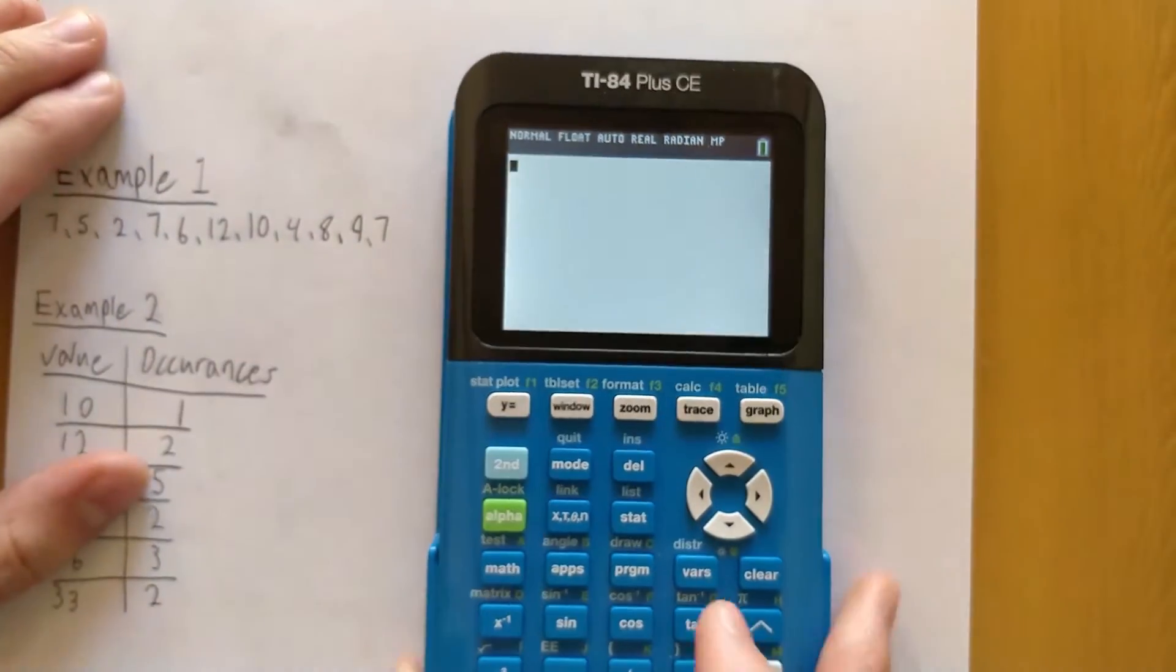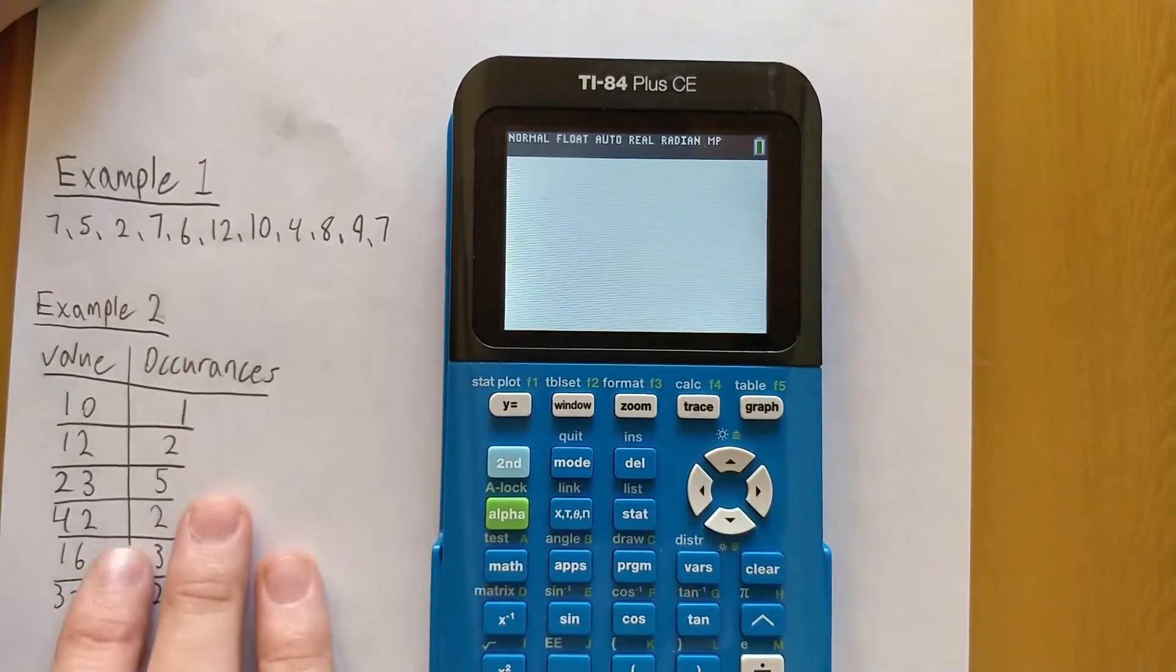So I just came up with a couple examples here. Let's see if we can find the mean, median, and mode of these data sets.